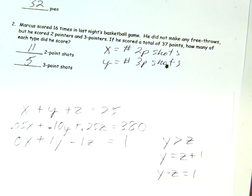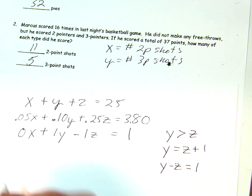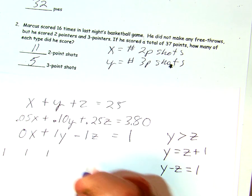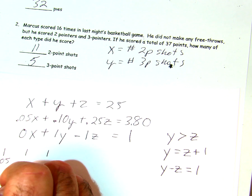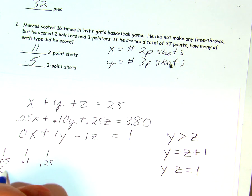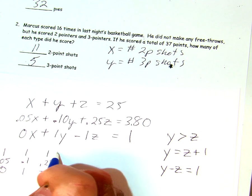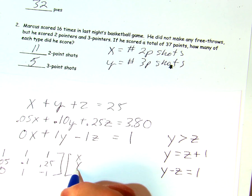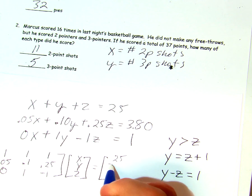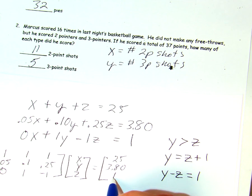So, now we have all the information to set up our 3x3 matrix. We've got coefficients of 1, 1, 1. We've got a coefficient of 0.05, 0.1. We don't need that extra 0 after the 1. And 0.25. Then, on the third row, we have the coefficient of 0, 1, and negative 1. Your x, y, and z, and that all equals your matrix of 25, $3.80, and 1.